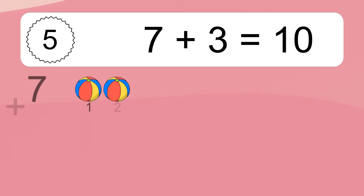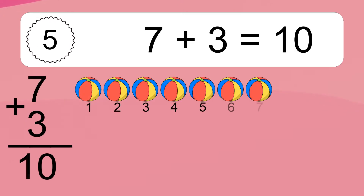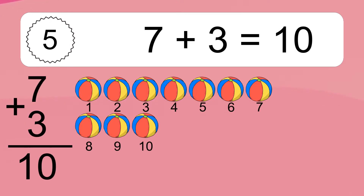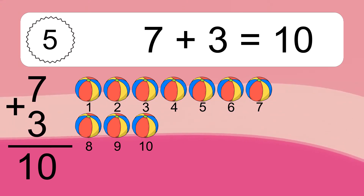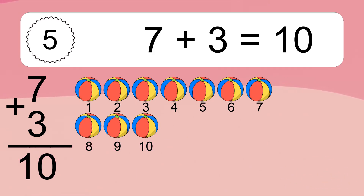7 plus 3 equals what? 7 plus 3 equals 10. Let's count it. 1, 2, 3, 4, 5, 6, 7, 8, 9, 10.